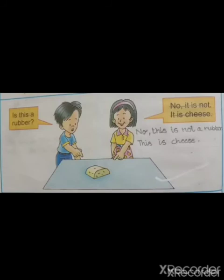Now read the next question: Is this a rubber? A boy is asking a question: Is this a rubber? Now the girl is giving an answer: No, this is not a rubber. This is cheese. So children, cut the sentences given above and write down the correct answer: No, this is not a rubber. This is cheese.